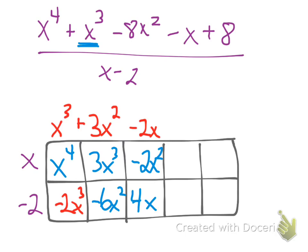And 4x plus what will give me my negative x? That's going to be a negative 5x. Which means the top is a minus 5. And then the bottom is going to be a positive 10.